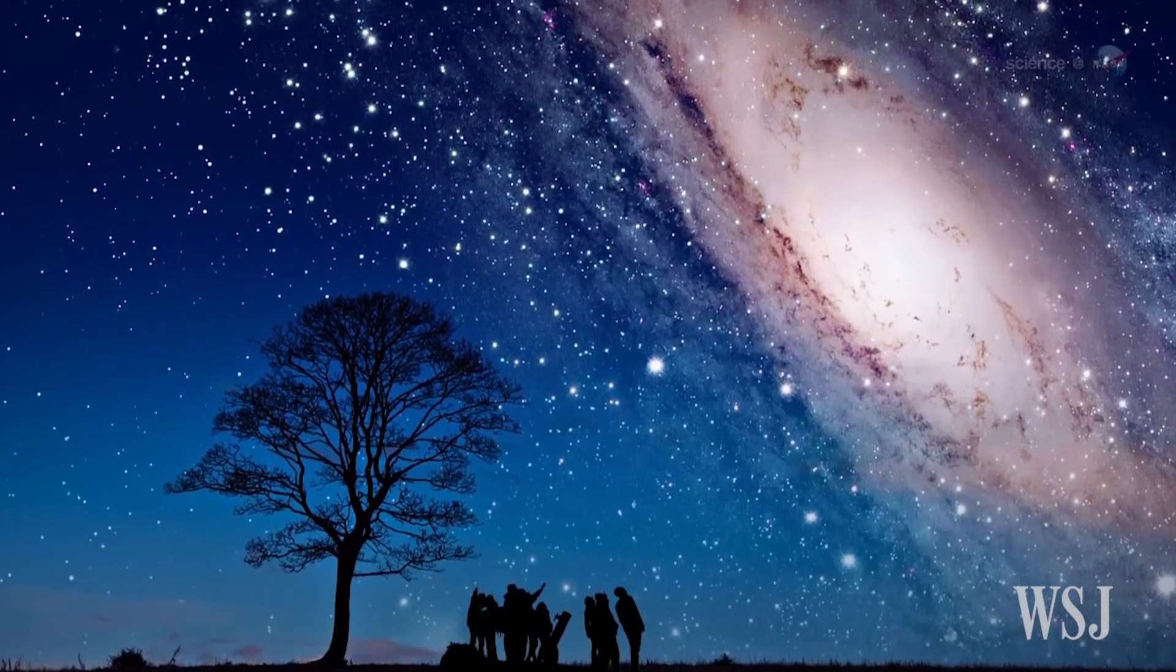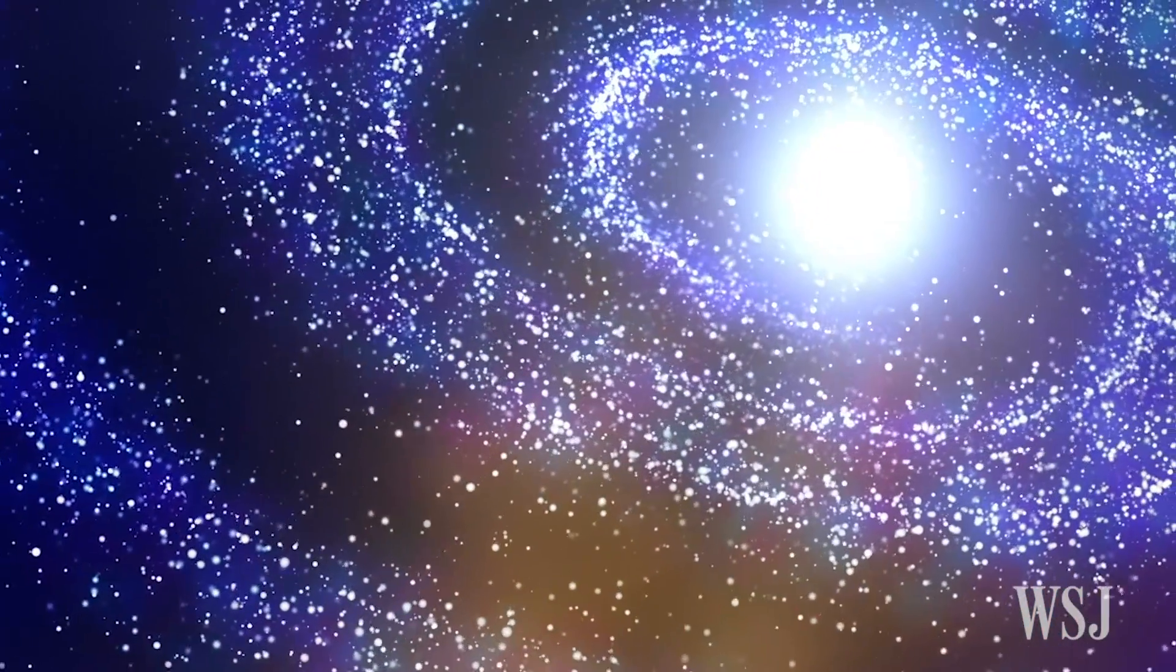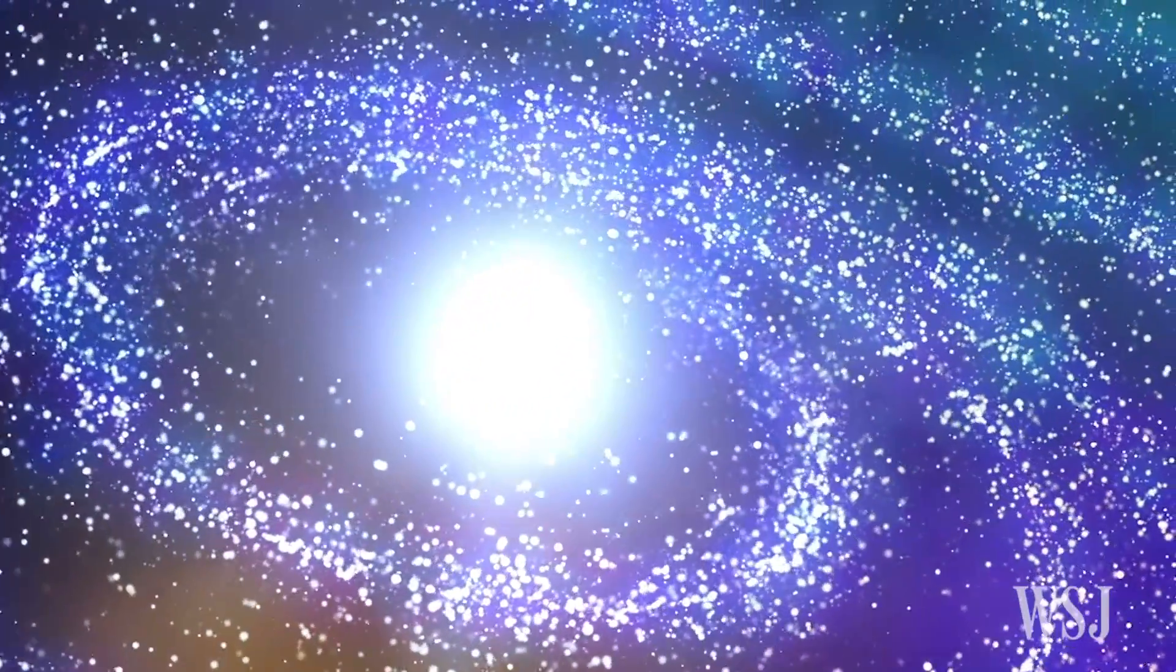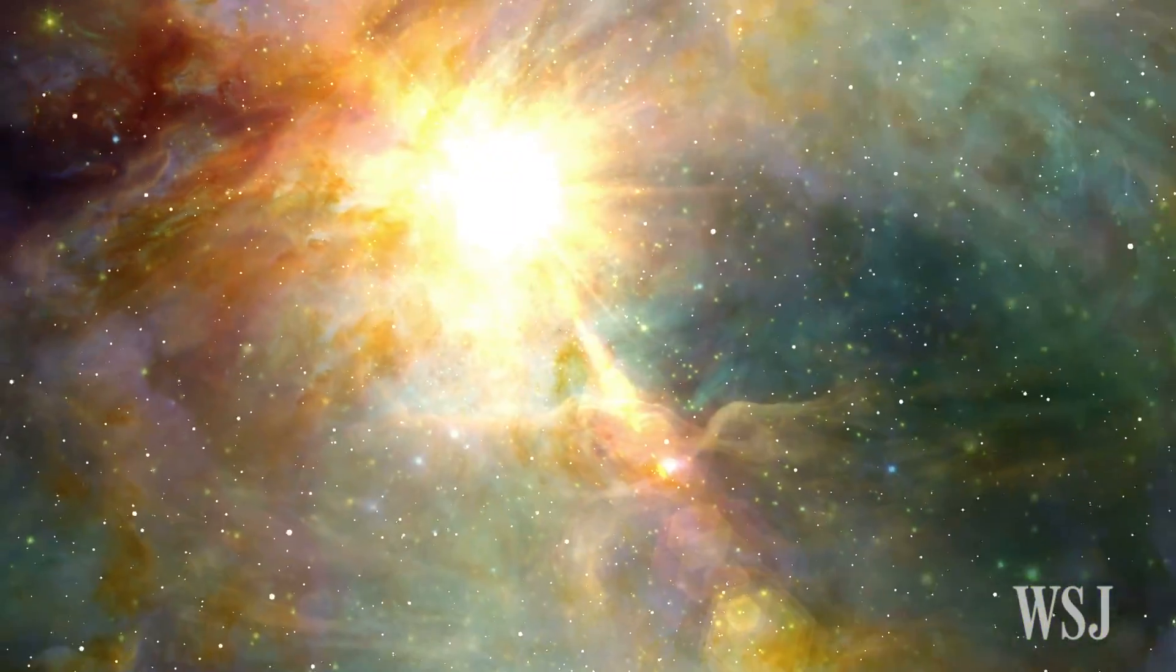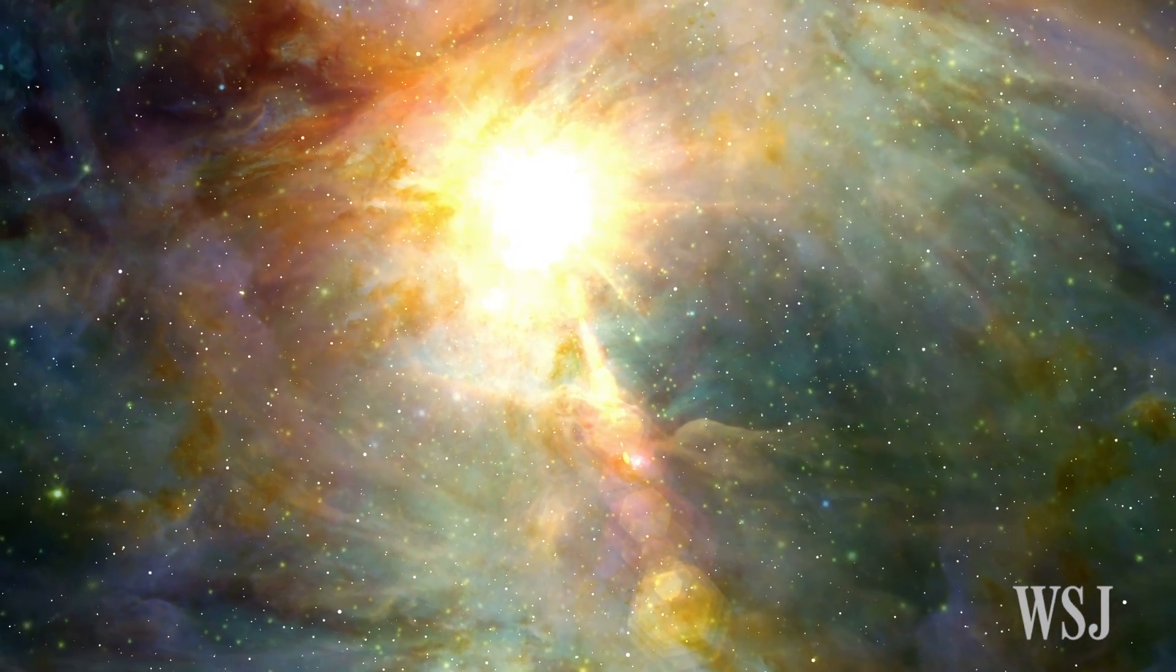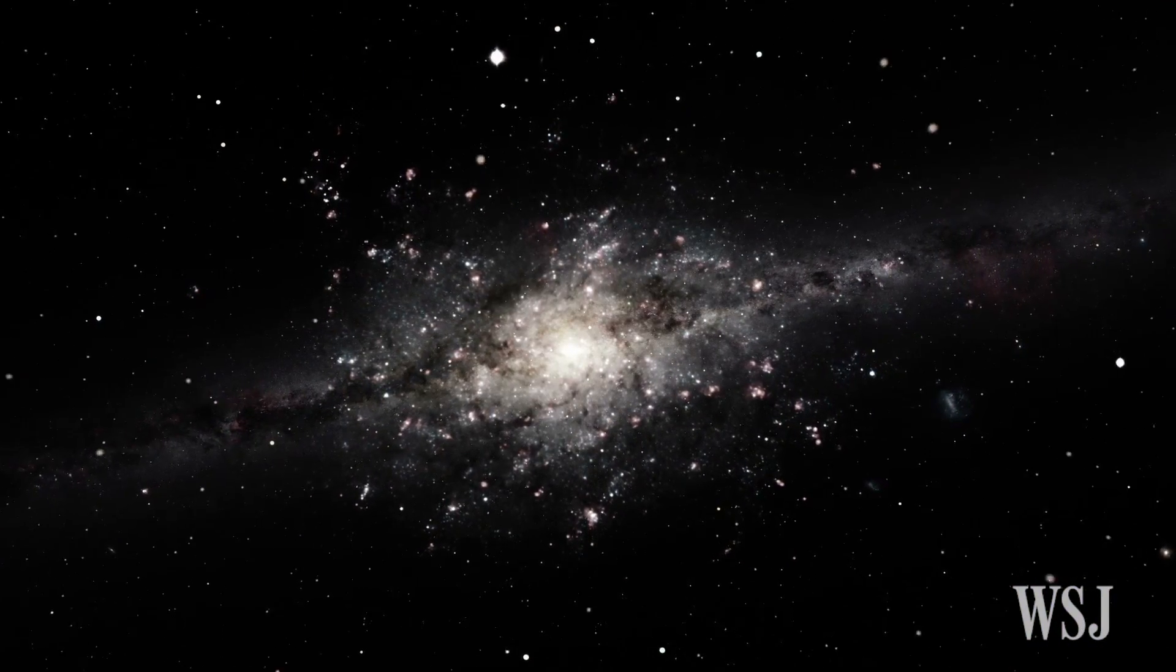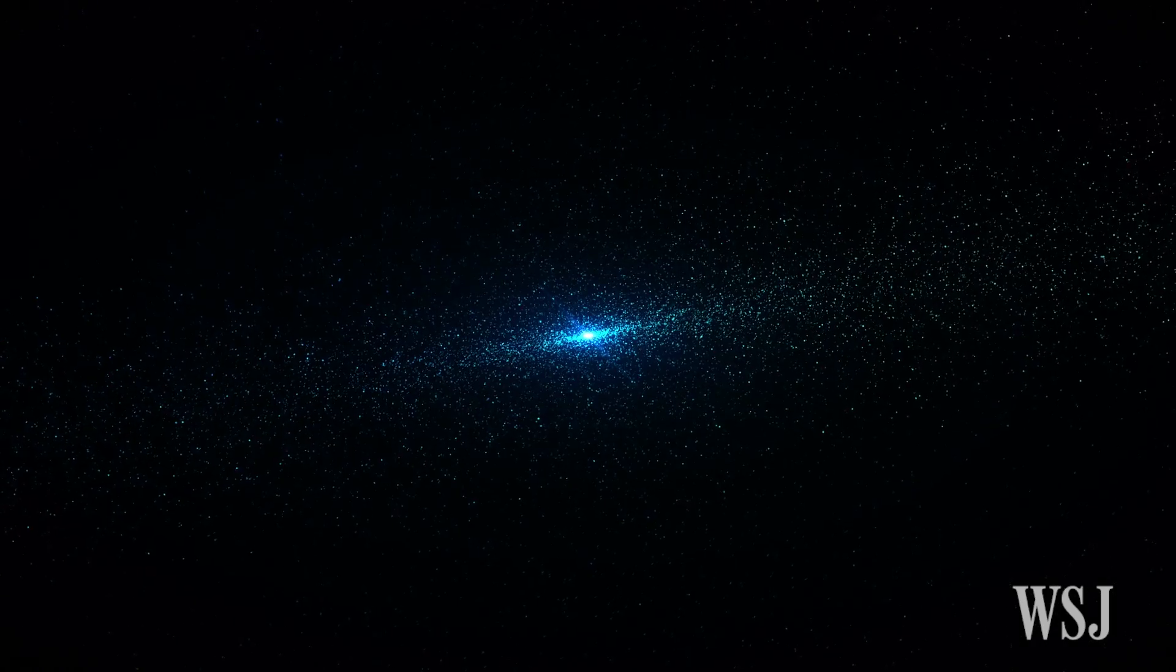Compared with our galaxy, super spirals can shine with anywhere from 8 to 14 times the brightness and have as much as 10 times the mass. Their disk of stars can be four times as wide as the Milky Way's estimated width of 100,000 light-years, and they churn out stars as much as 30 times faster.